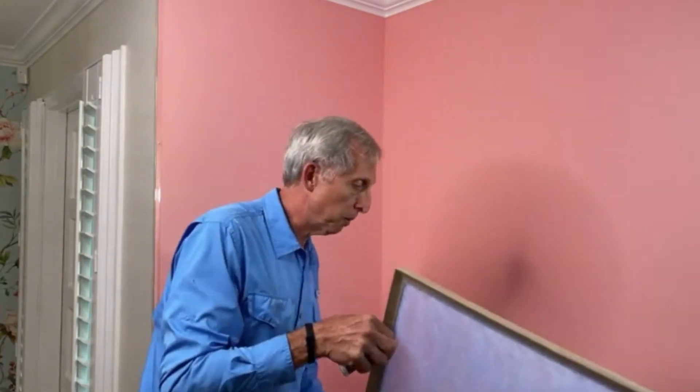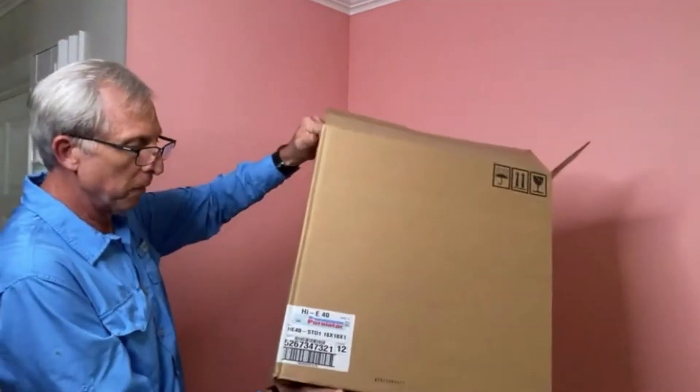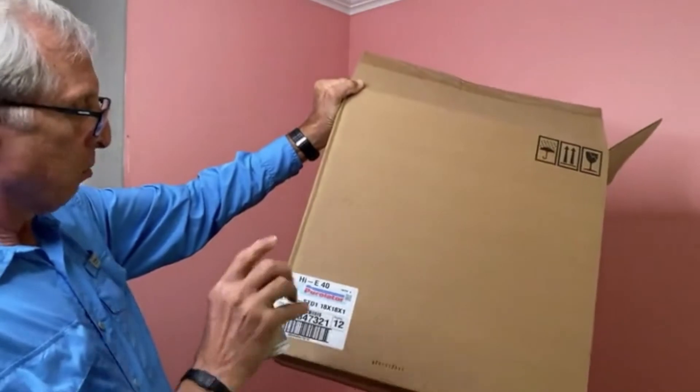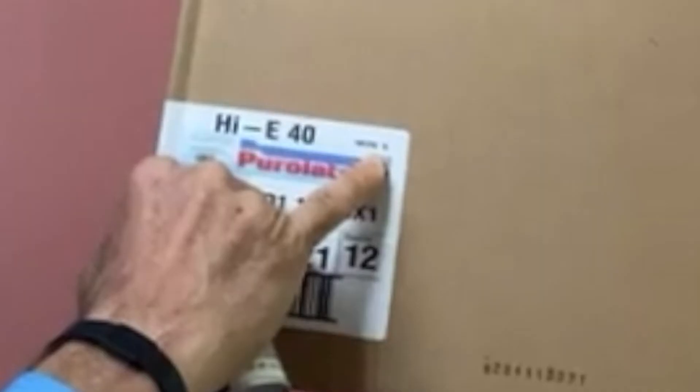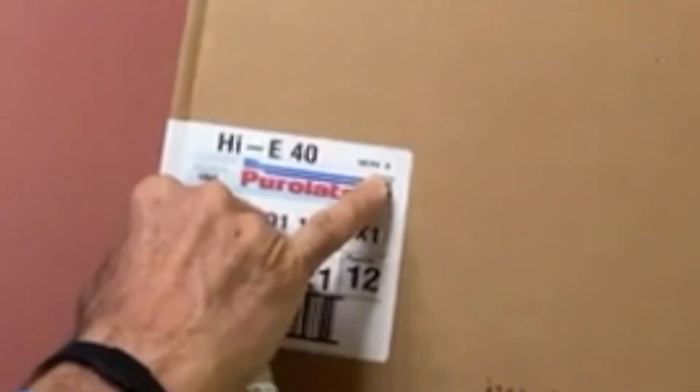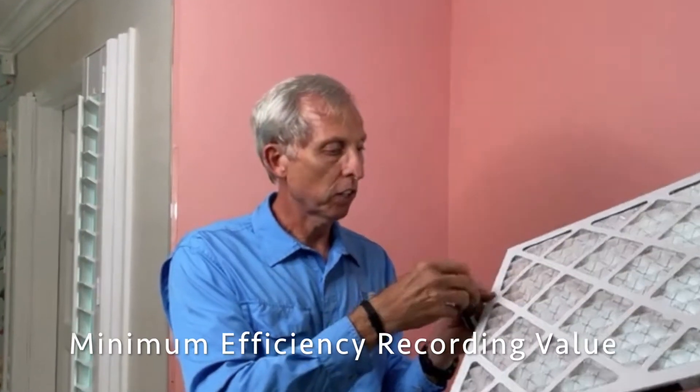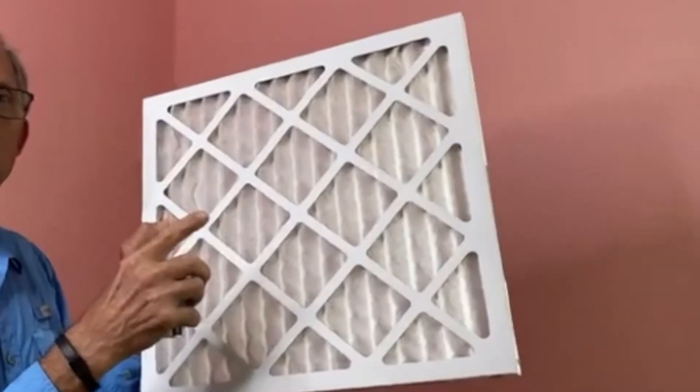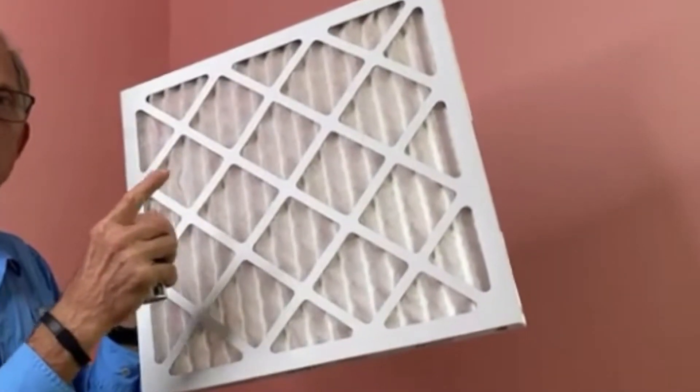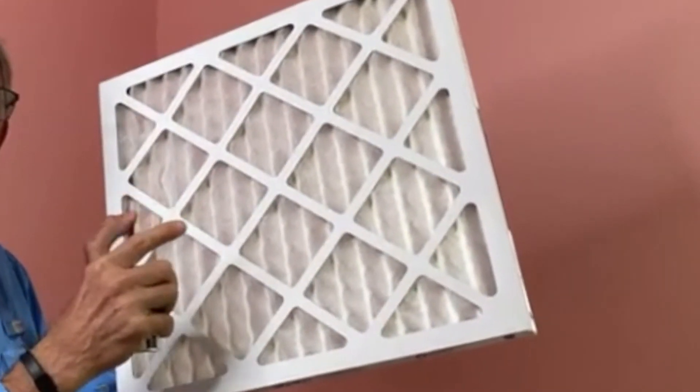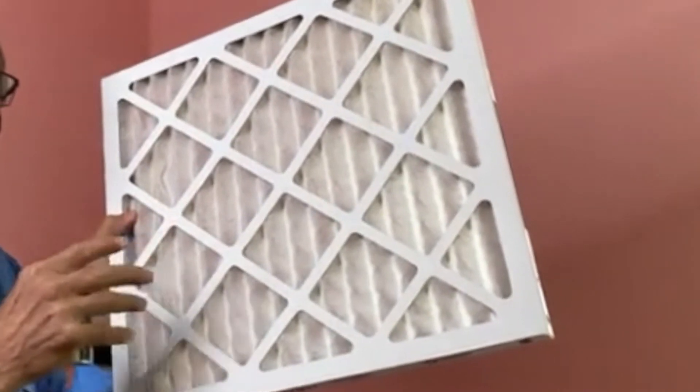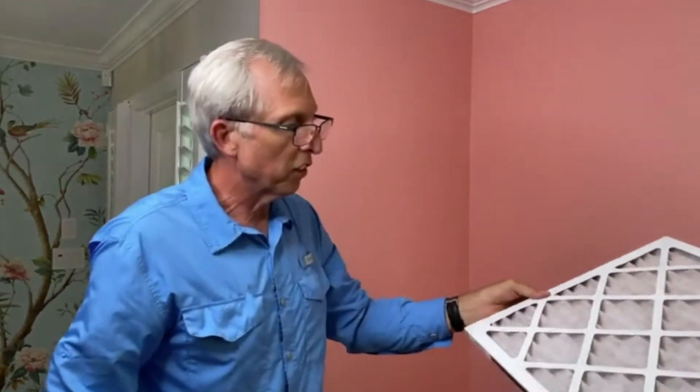One thing I recommend people do is use a better filter. Here's your average filter box. The brand doesn't matter, but the average AC system can handle MERV 8. MERV stands for Minimal Efficiency Recording Value. And the higher the MERV rating, the more particles and dust it pulls out, the more hair, the more allergens. This is a MERV 8 filter.